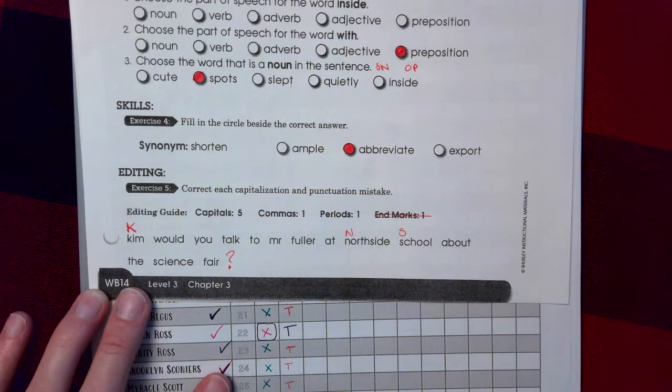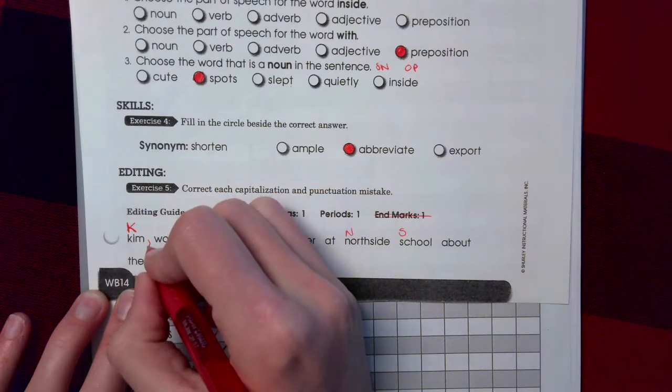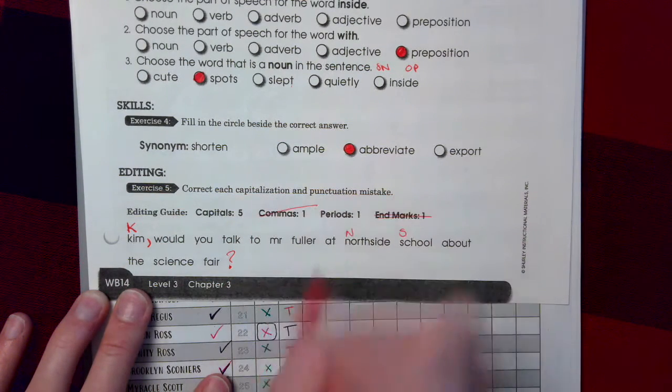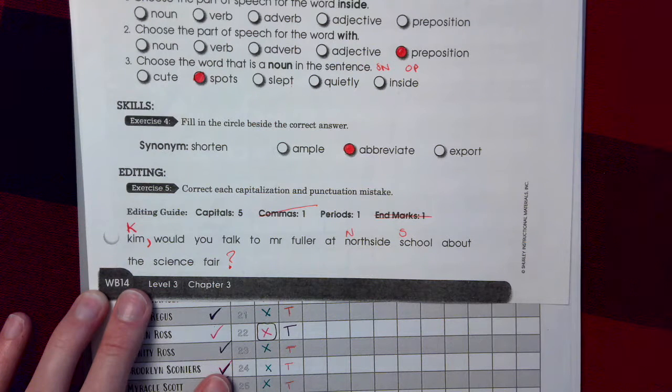Commas, listen for where my voice pauses. Kim, would you talk to Mr. Fuller at Northside School about the science fair? Well, right at the beginning, right? Because we have that kind of introductory phrase. Kim. And then where are we going to add a period? Well, look in the name. Mr. Fuller. We're going to need a period for the name Mr. Fuller.